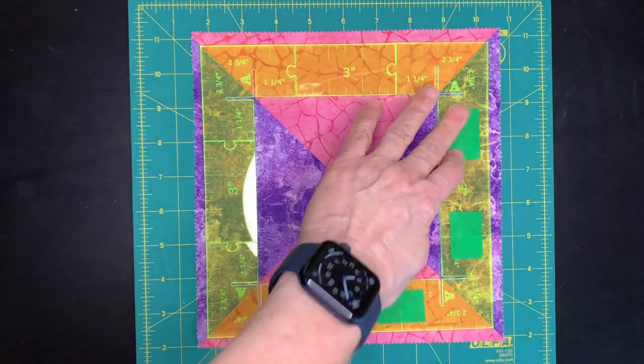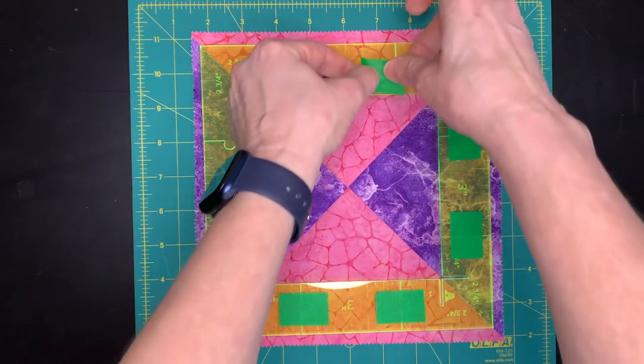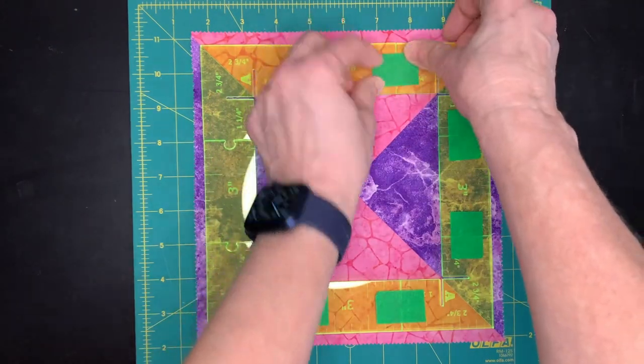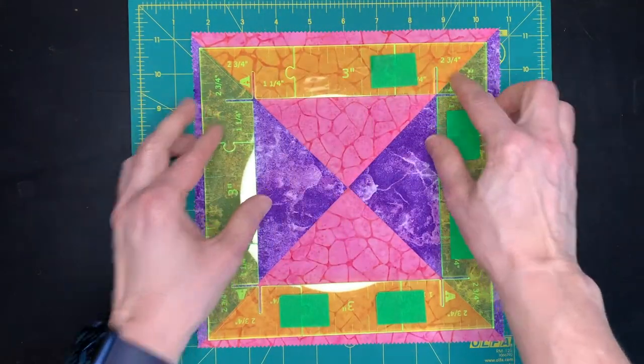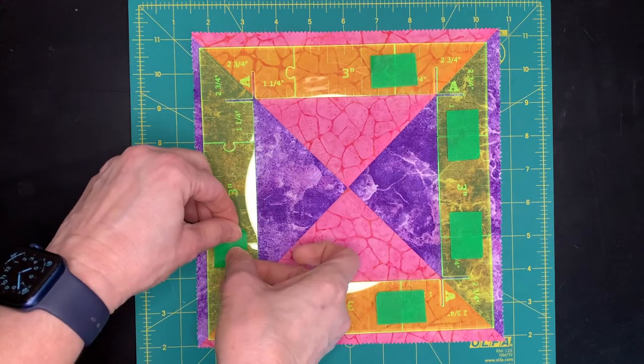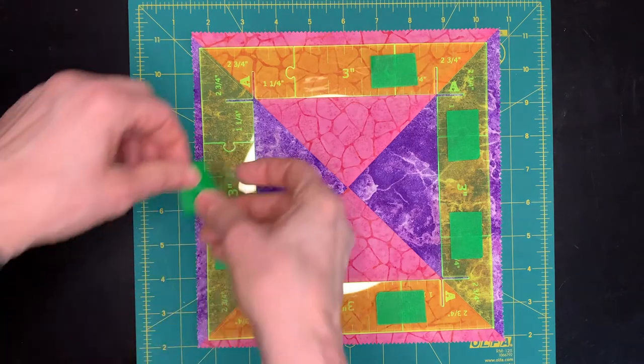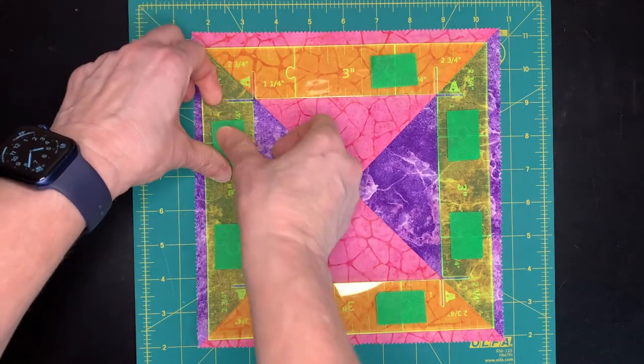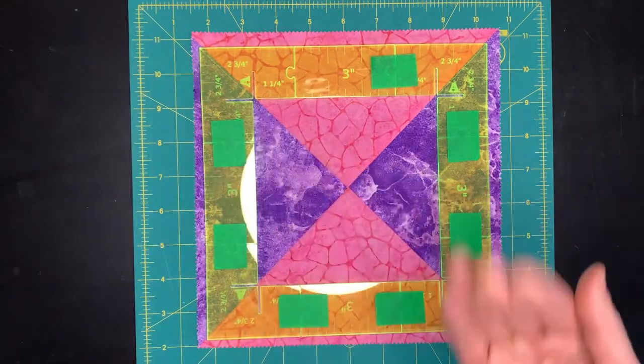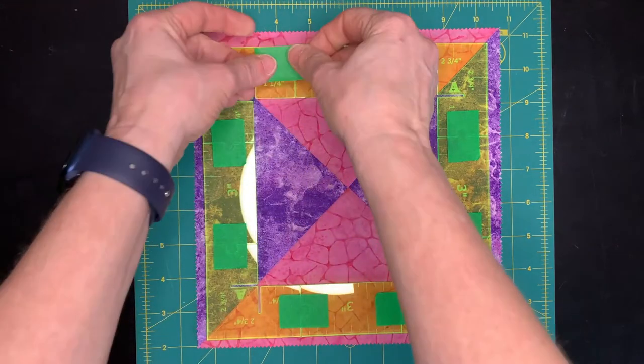But sometimes the measurements don't matter as much as just aligning things with your quilt block like the corners here. So I'm just going to put the tape in all the spots, all the joints. You want to make sure that your tape piece is long enough to actually hold the pieces together when you lift it up.